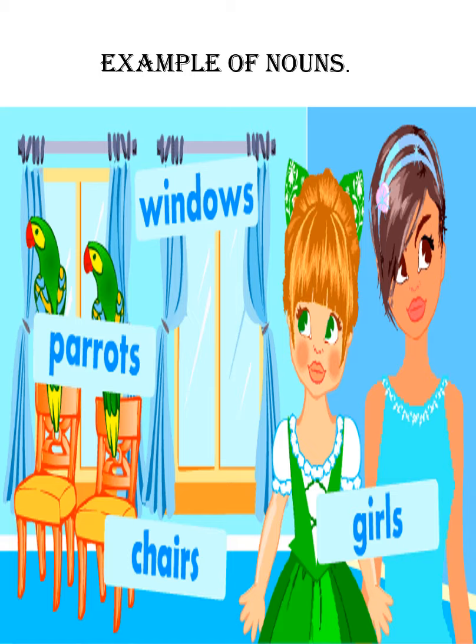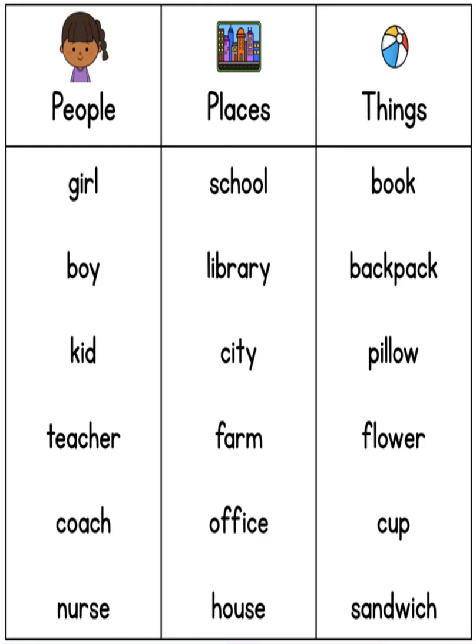Look at your screens. Window — इसका नाम है ना, यह thing भी है और इसका name है Window, तो यह Noun है। Parrots — यह क्या है? Parrots, इनका name है। Chairs — यह thing है और इनका name है Chairs। यह thing है और इनका नाम — यह Noun है।